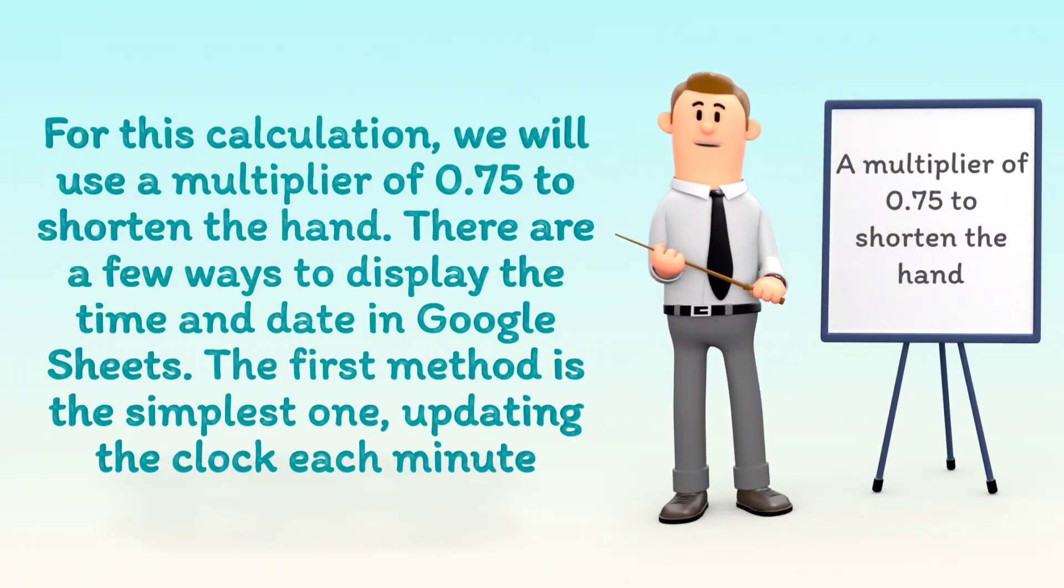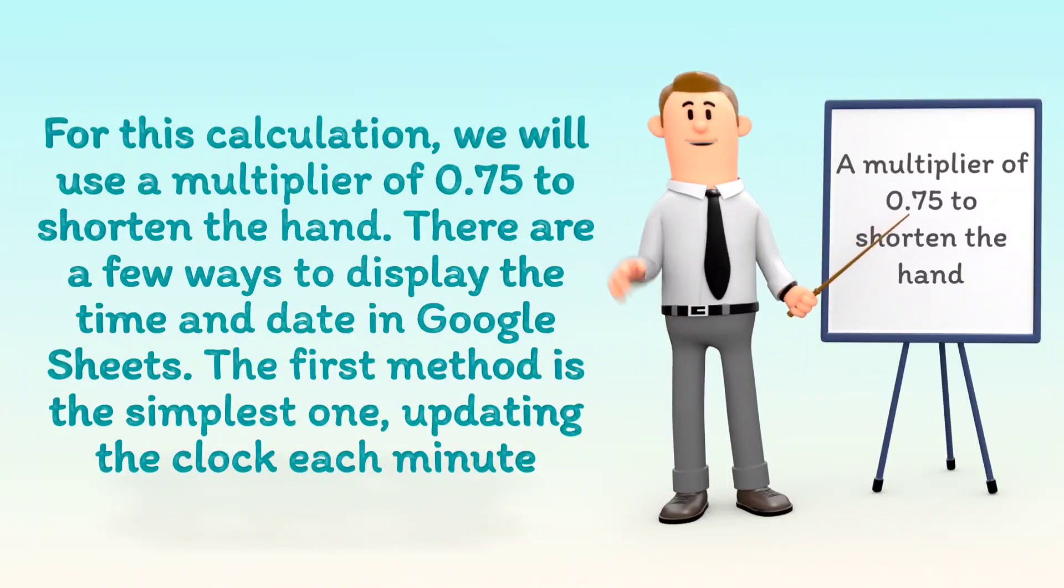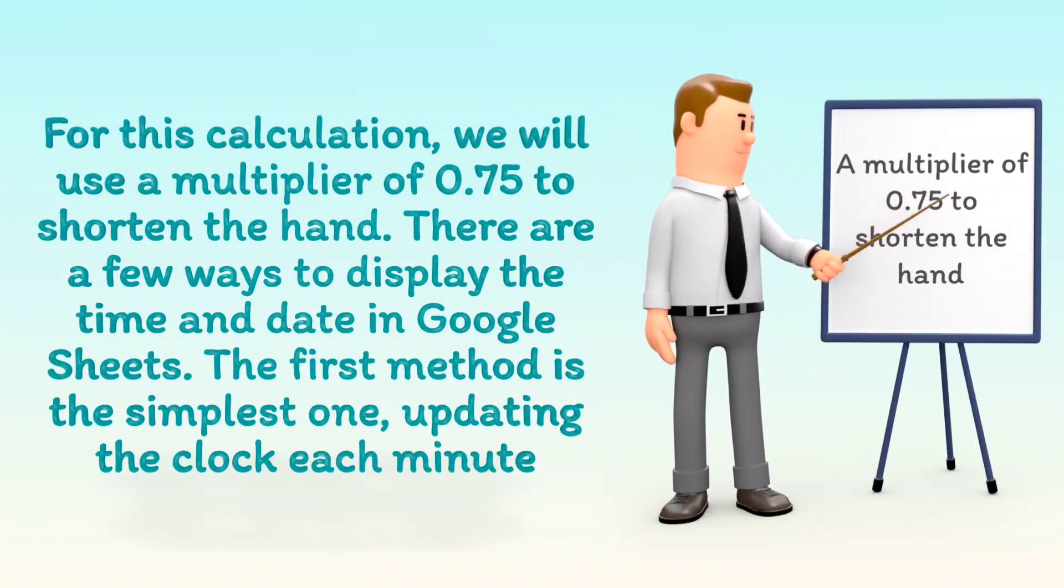There are a few ways to display the time and date in Google Sheets. The first method is the simplest one, updating the clock each minute.